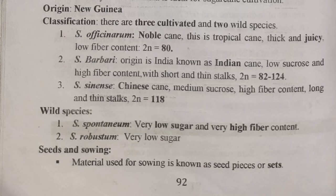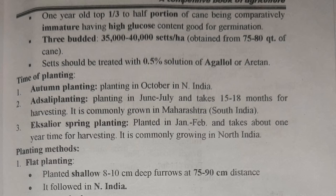About seeds and sowing: the material used for sowing is known as seed, and in the context of sugarcane, seeds are called sets or seed pieces. From a one-year-old plant, the top one-third to half portion is taken, which is immature and has a high glucose content — good for germination. These sets are generally three-budded. 35,000 to 40,000 sets per hectare are required, obtained from 75 to 80 canes.